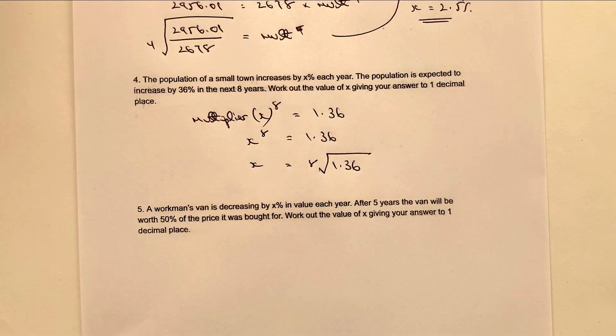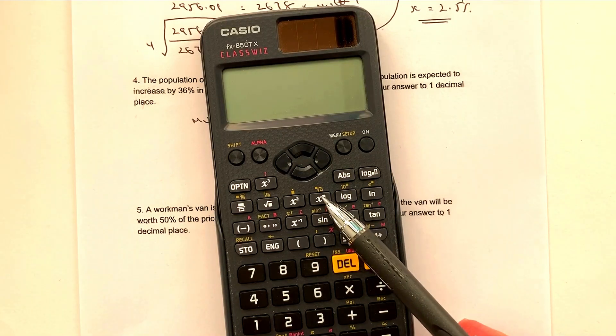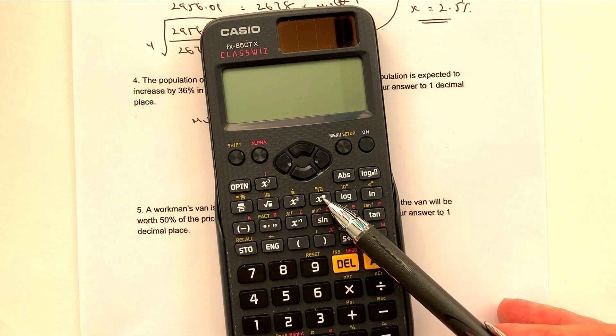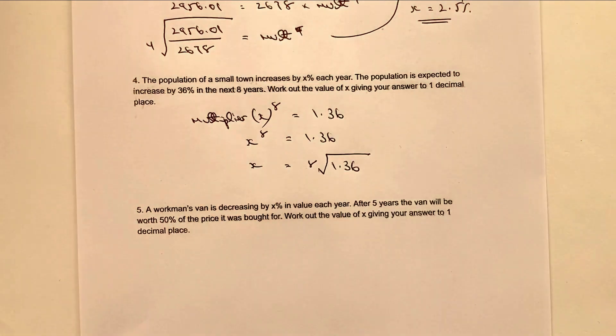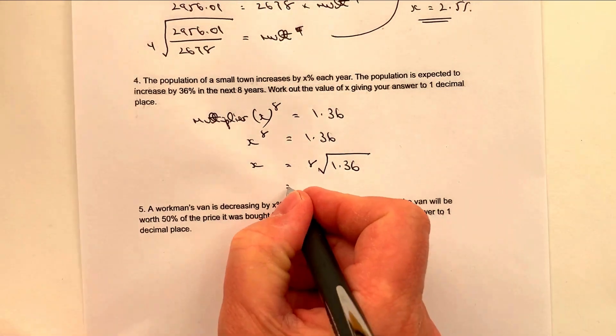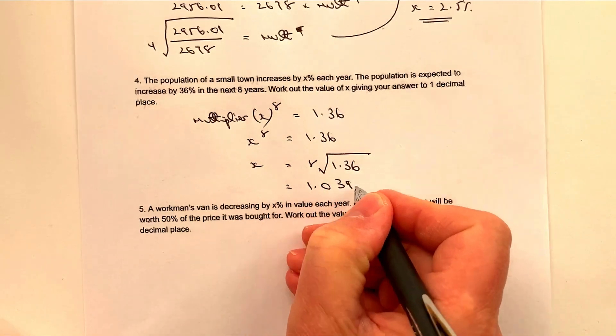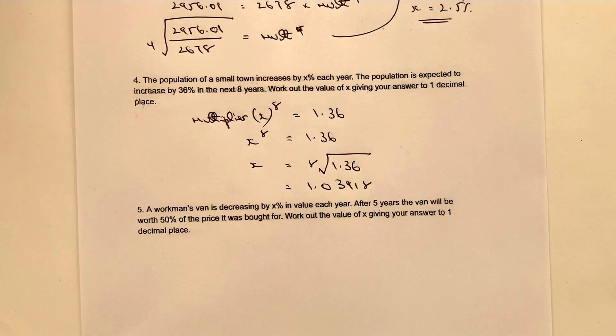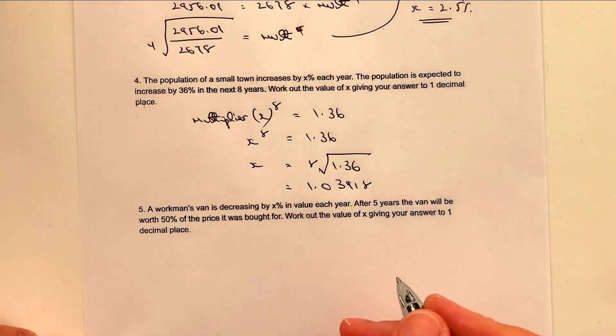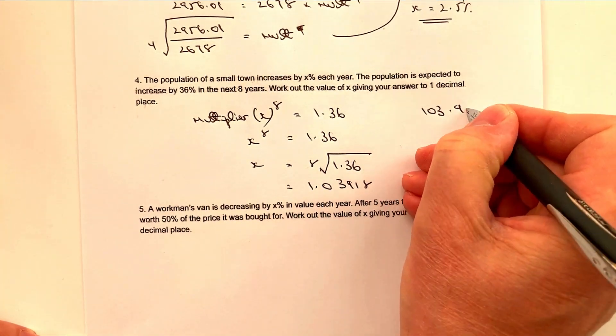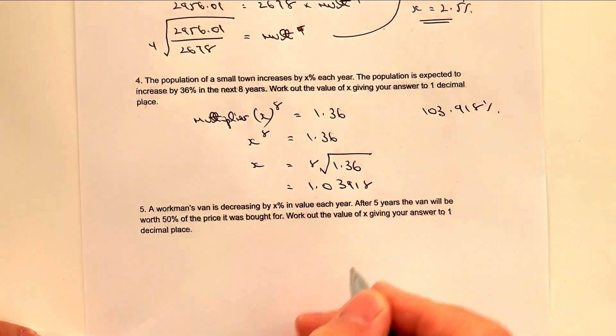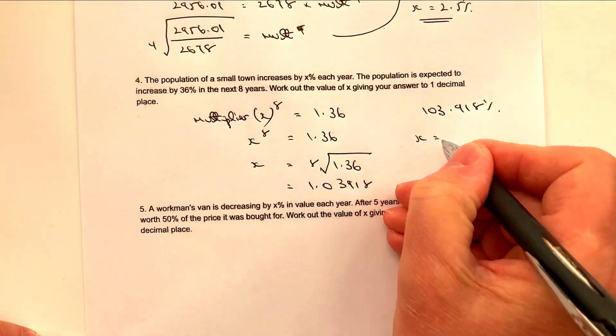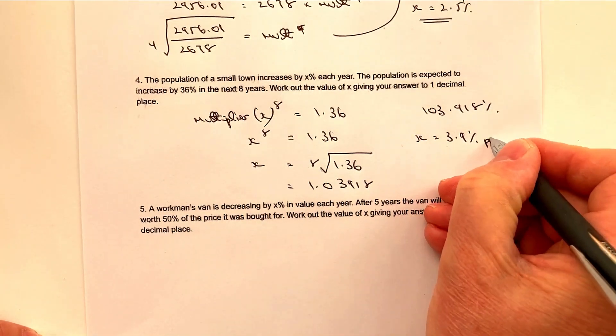Now, if you're not sure about how to do that, I'll just bring my calculator in and it's actually going to be this key here. Now in my calculator, I access that by using the shift button and then pressing this one. But it allows me to work out the eighth root and the eighth root for this is going to be 1.03918. Now remember that that is the same as saying 103.9918 percent. So to one decimal place, the increase is going to be that X equals 3.9 percent per year.